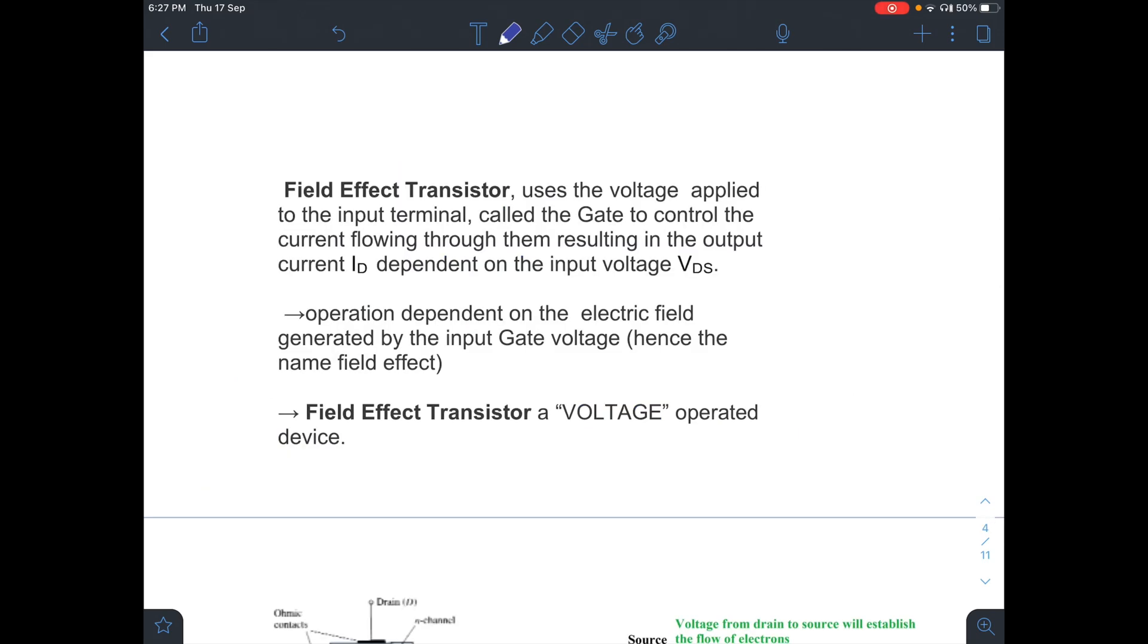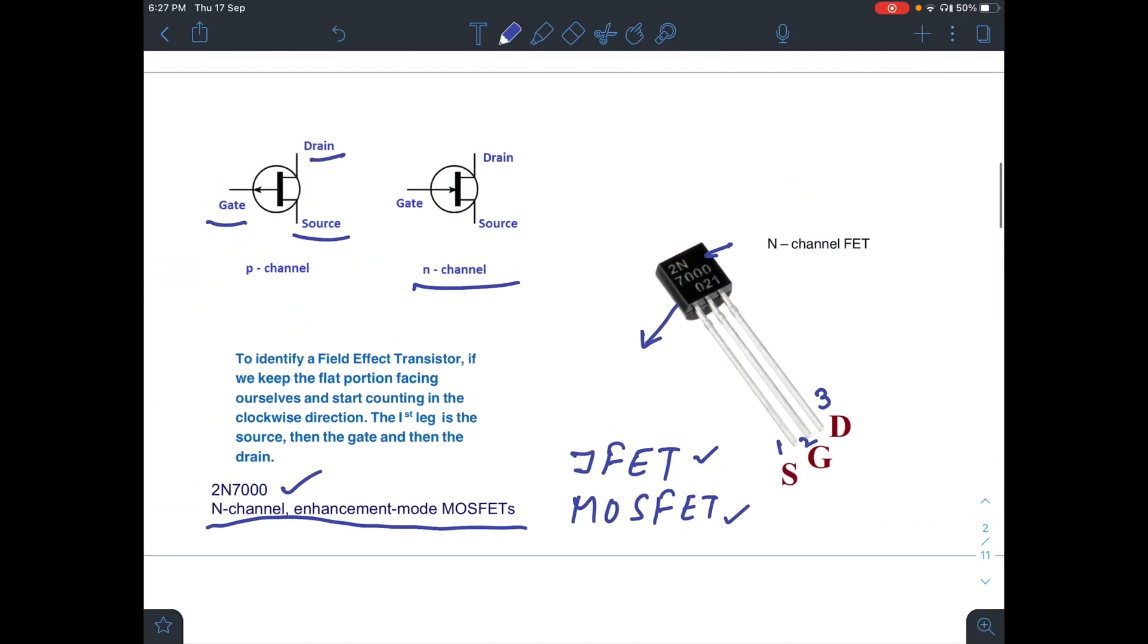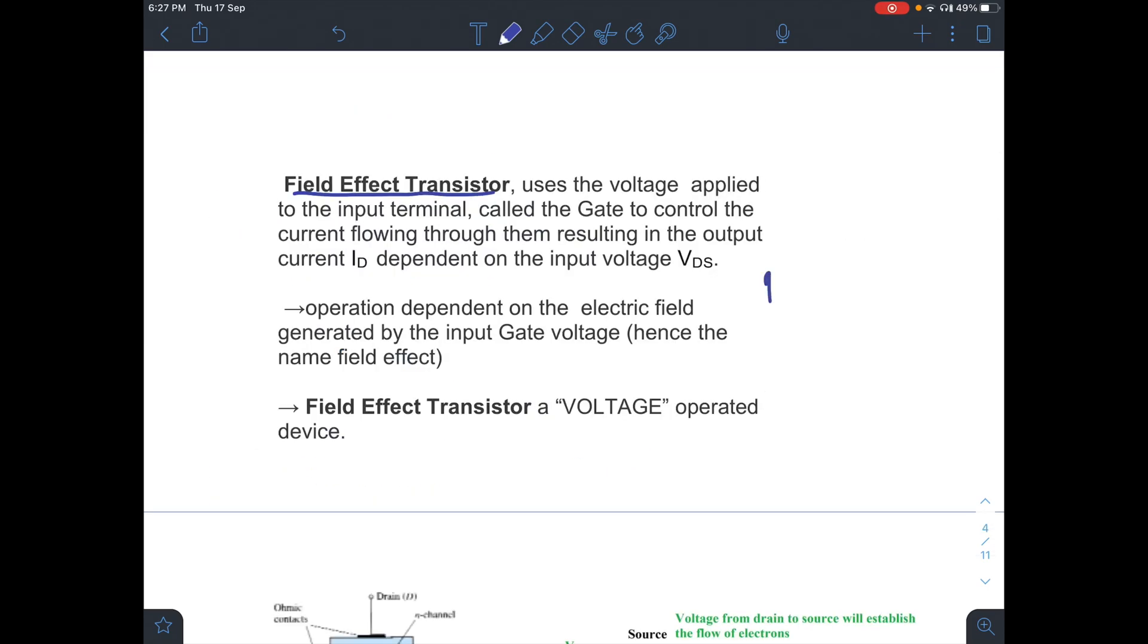Why the name field effect transistor? The input voltage VGS controls the output current ID. That is, the operation is dependent on the electric field generated by the input gate voltage. Therefore, it is known as field effect transistor and it is a voltage operated device.